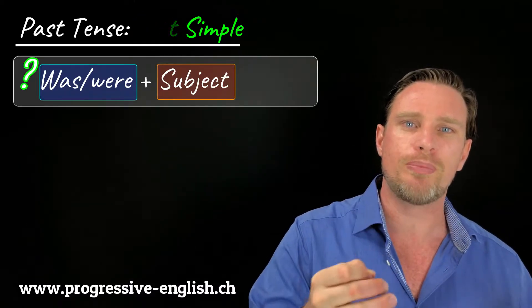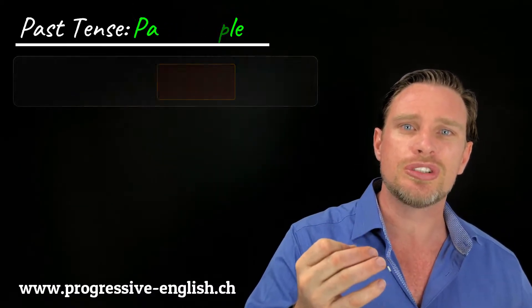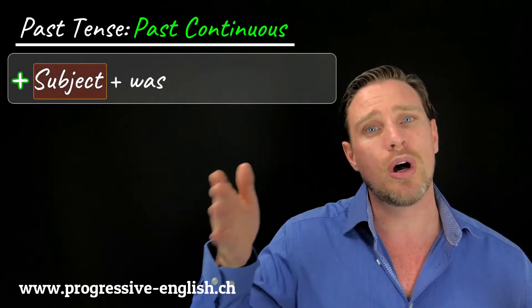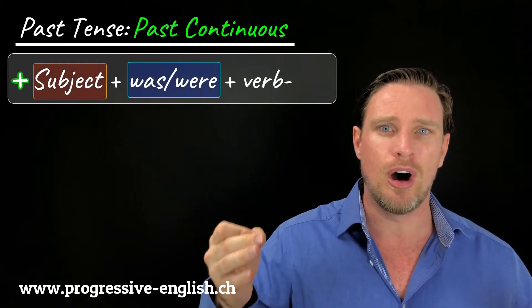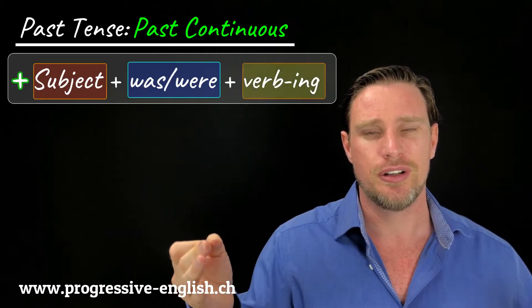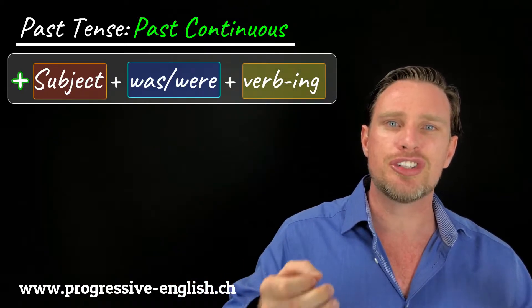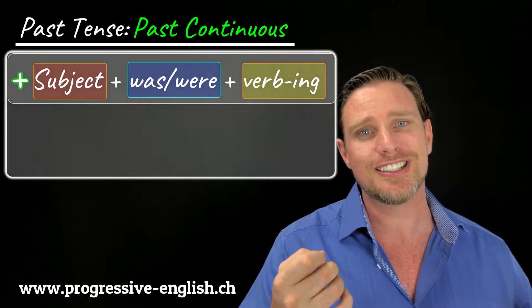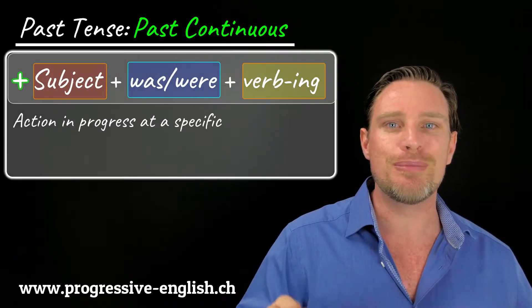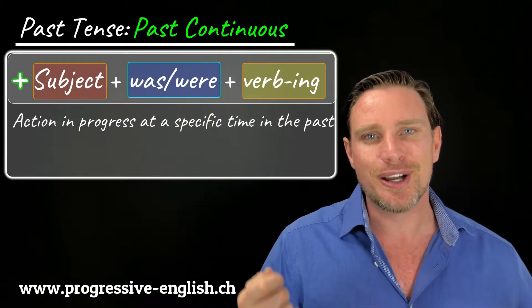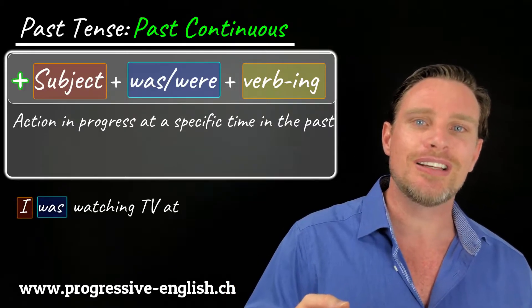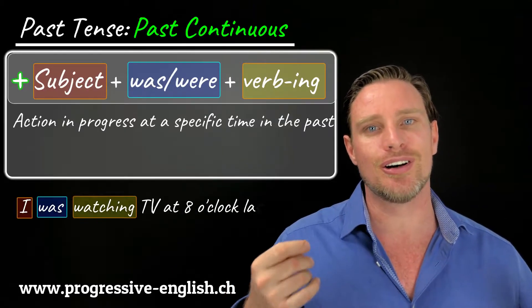Now let's move on to past continuous. We form this aspect with subject plus 'was/were' plus the verb -ing, and we use this structure to show an action that was in progress at a specific time in the past. For example: I was watching TV at eight o'clock last night.